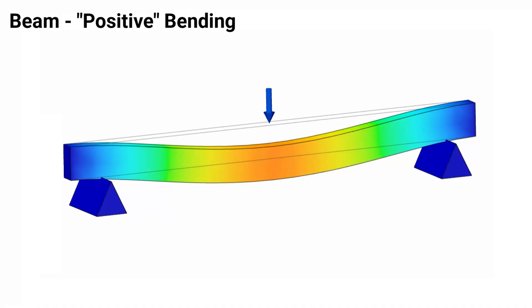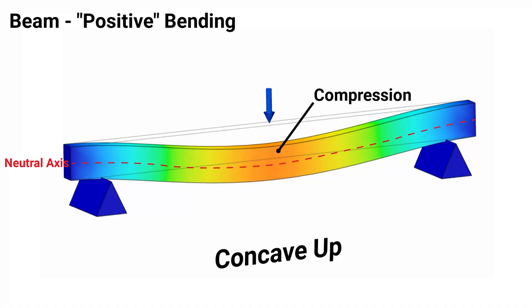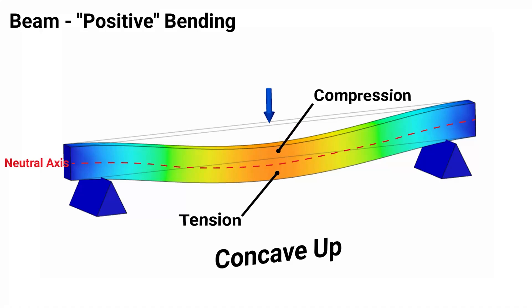By convention, positive bending means we will have a deflected shape that is concave up. Most importantly, with respect to something we call the neutral axis — the centroidal neutral axis acting at the centroid of the cross section — we will have compressive stresses in the top fibers above the neutral axis and tensile stresses in the bottom fibers below the neutral axis.